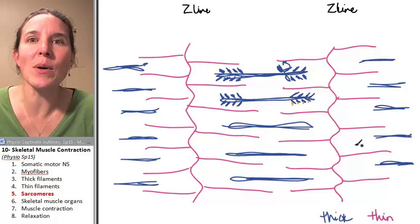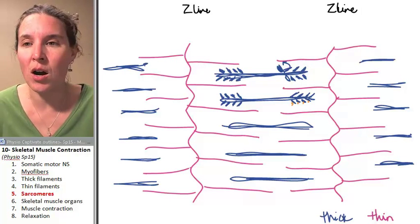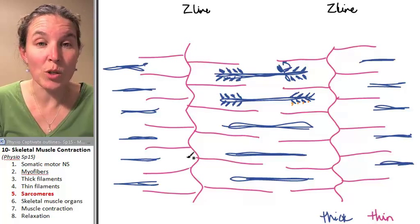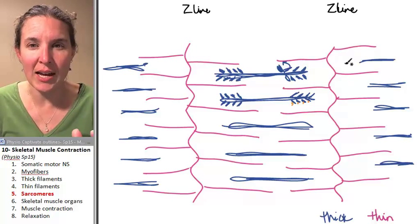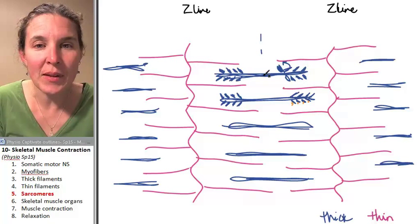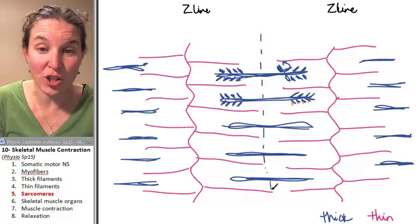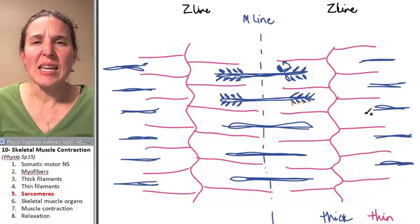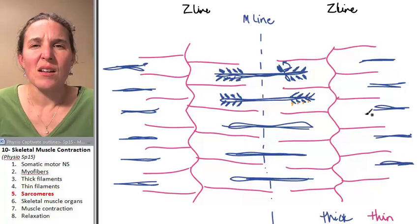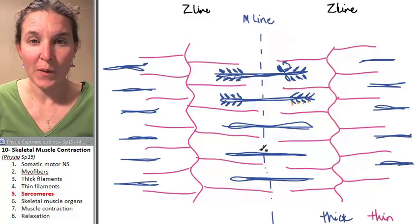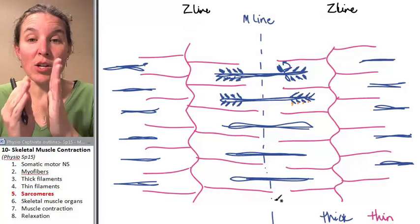What else do you need to know? Now we need to label parts of this organizational structure. You've got the Z line, which is where the actin molecules attach, the thin filaments attach. You also have an M line, and this actually is a structure that goes down the middle. This is the M line. So the M line goes right down the middle.